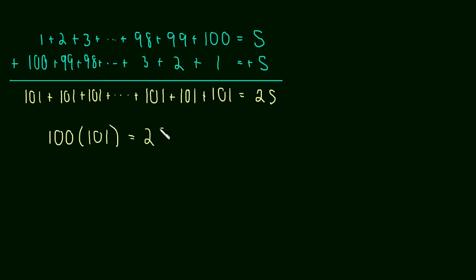We have 100 terms of 101. And this is equal to two times the sum. But what we're trying to find is just one, the sum itself. So we just divide both sides by two. And we get the sum is equal to 100 times 101 divided by two, which is equal to the sum, which in this case for 100, this happens to be, if you want to add up 1 through 100, this is 5,050.